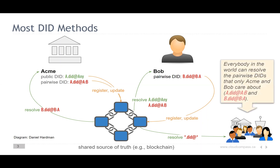But the problem is that everyone in the world can also resolve those DIDs. So although Bob and Acme will only use those DIDs for their relationship, everyone else in the world can see them. That's the challenge we're trying to solve with pairwise DIDs. Let's take a look at how pairwise DIDs and the DID peer method work.